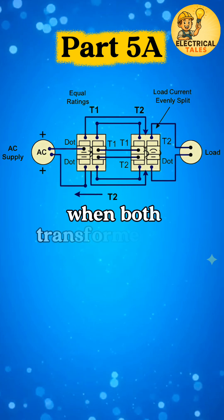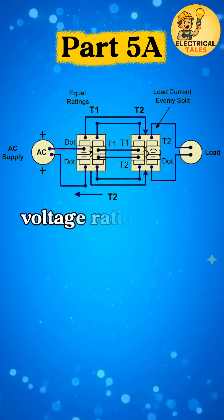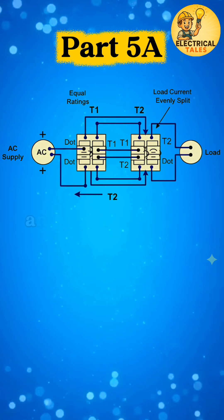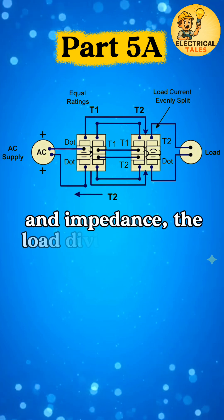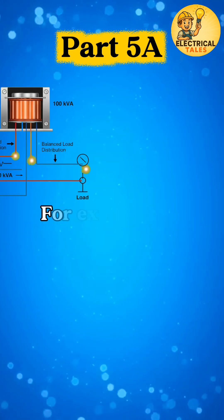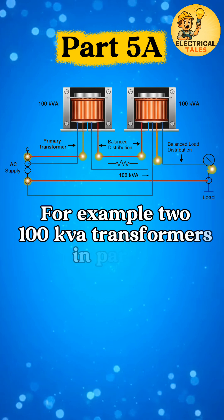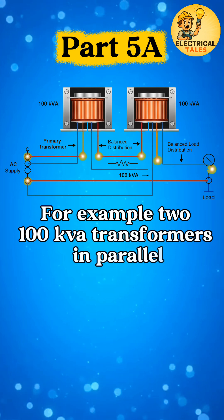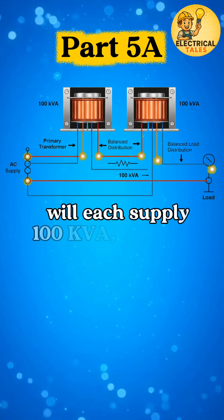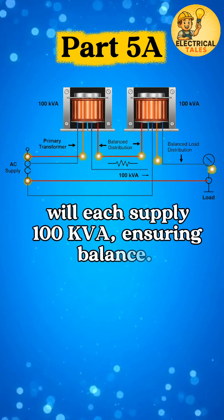When both transformers are identical in polarity, voltage ratio, phase sequence, and impedance, the load divides equally. For example, two 100 kVA transformers in parallel will each supply 100 kVA, ensuring balance.